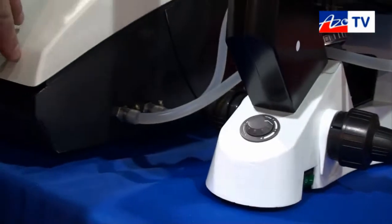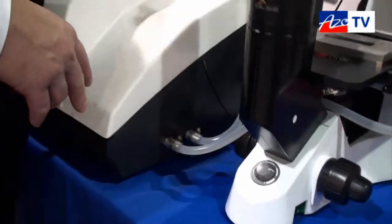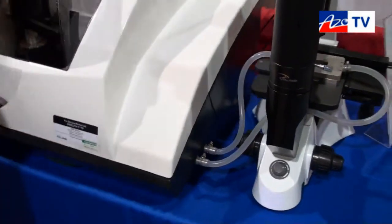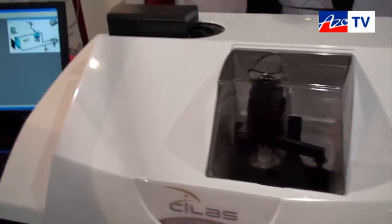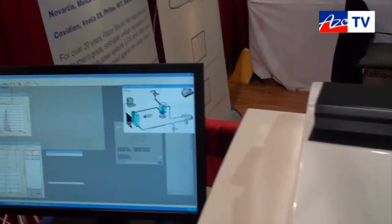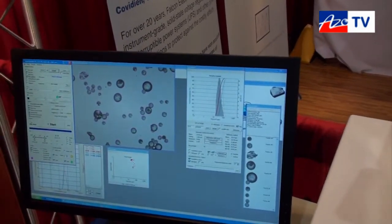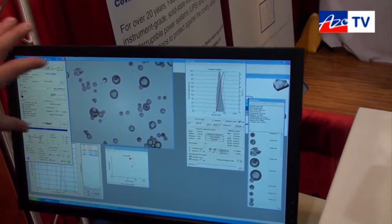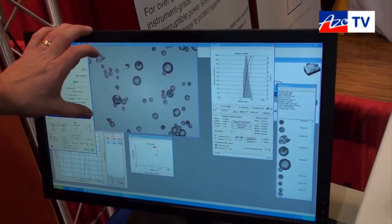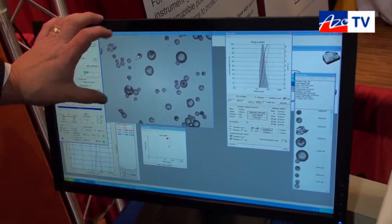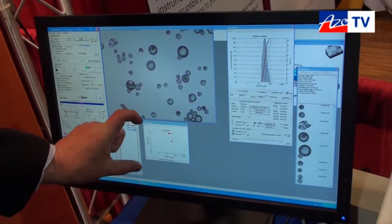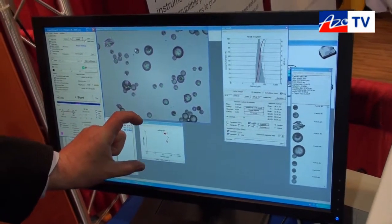What the software will show you is we will open up the shape software and you will see here we have a full featured shape analysis software. We have an image that is one of the images that we collected. We can trend on various different types of measurements or parameters, in this case we're trending on aspect ratio which is an indication of non-spherical particles.